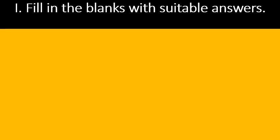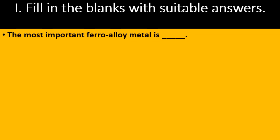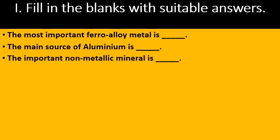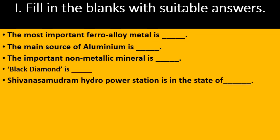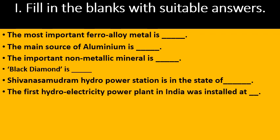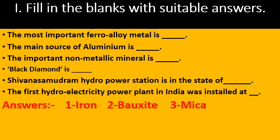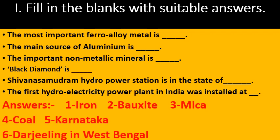Fill the blank with suitable answers. The most important ferro-alloy metal is ___. The main source of aluminium is ___. The important non-metallic mineral is ___. Black diamond is ___. The first hydro-electric power plant in India was installed at ___. Now the answers: The most important ferro-alloy metal is iron. The main source of aluminium is bauxite. The first hydro-electric power station was installed in India at Darjeeling in West Bengal.